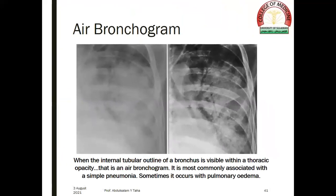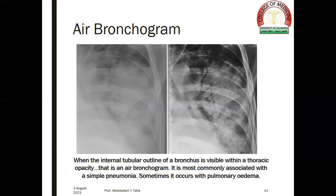The air bronchogram is an important radiographic sign. Normally both the bronchi and the adjacent lung parenchyma or alveoli contain air, so both are radiolucent. But when the lung parenchyma is consolidated and the alveolar air is replaced by fluid and/or cells, the lung parenchyma becomes radio-opaque and this will outline the air-filled bronchi. When the internal tubular outline of a bronchus is visible within a thoracic opacity, that is called an air bronchogram. It is most commonly associated with simple pneumonia, and sometimes occurs with pulmonary edema.